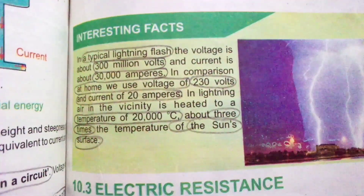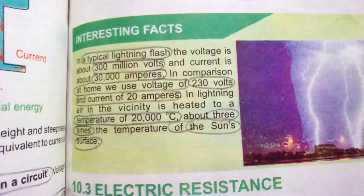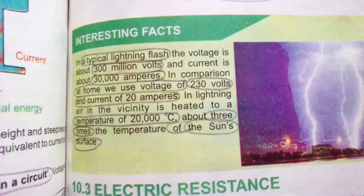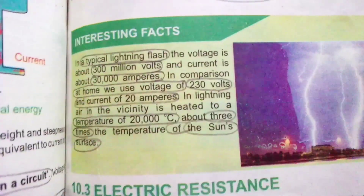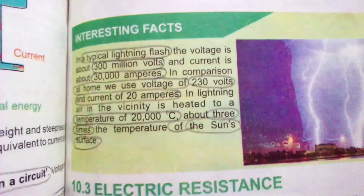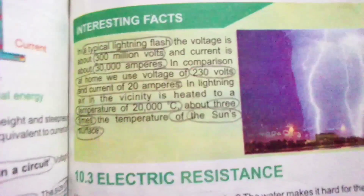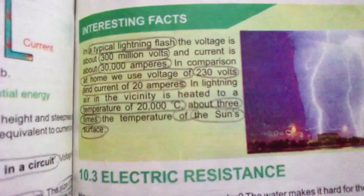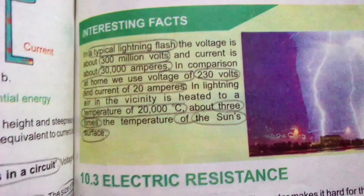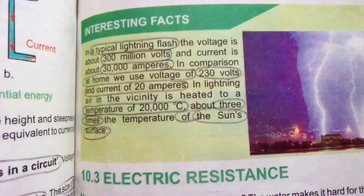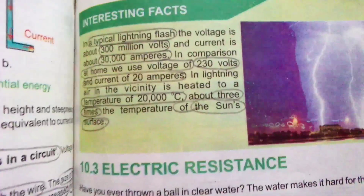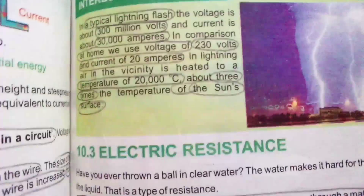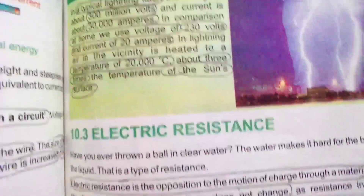In a typical lightning flash, the voltage is about 300 million volts. The lightning flash generates enormous heat - about 20,000 degrees centigrade, which is three times the temperature of the sun's surface.